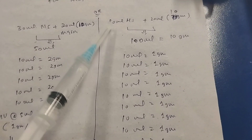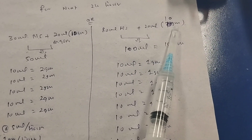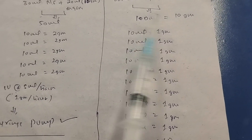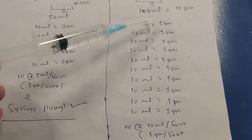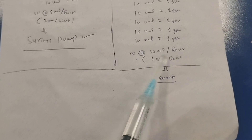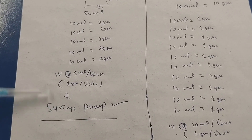An alternative protocol uses 80 ml normal saline plus 20 ml magnesium sulfate (10 grams), making a total of 100 ml. In this 100 ml solution, every 10 ml contains 1 gram. Run IV at 10 ml per hour to deliver 1 gram of magnesium sulfate per hour. The syringe pump method (50 ml) is generally preferred for ease of use.